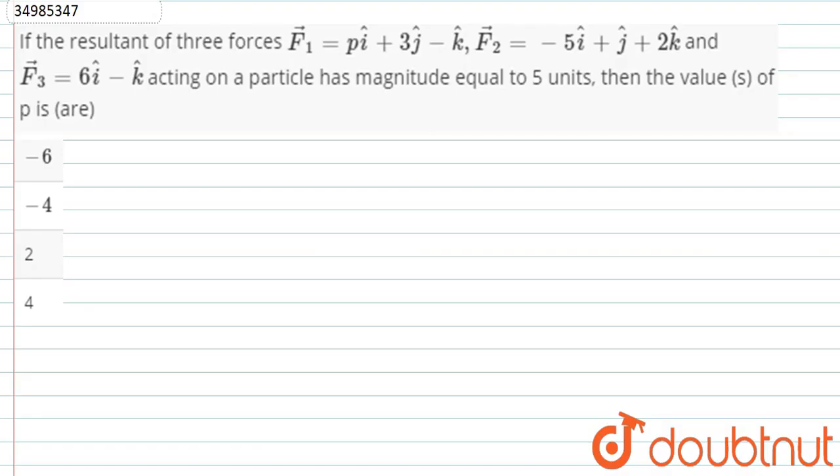Hi guys, I have a question here. This question asks: if three resultant forces F1, F2, and F3 acting on a particle has a magnitude equal to 5 units, then what is the value of p?